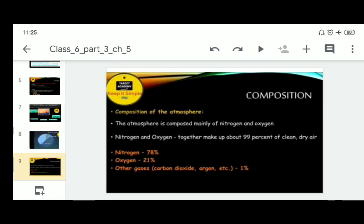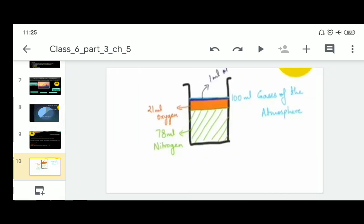The composition of the atmosphere - the atmosphere is composed mainly of nitrogen and oxygen. Nitrogen and oxygen together make up about 99% of clean dry air. Nitrogen is present 78%, oxygen 21%, and in 1% rest gases are there. If we will make a mixture of all, look at the diagram - 21 ml oxygen in orange color, 78 ml nitrogen in green color and 1% rest gases of 1 ml in blue color. So it totally becomes 100 ml of gases in the atmosphere.